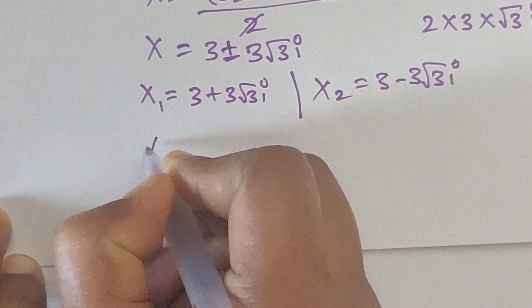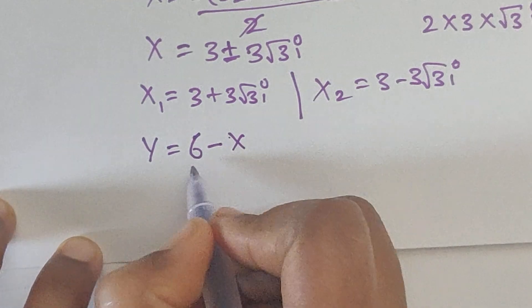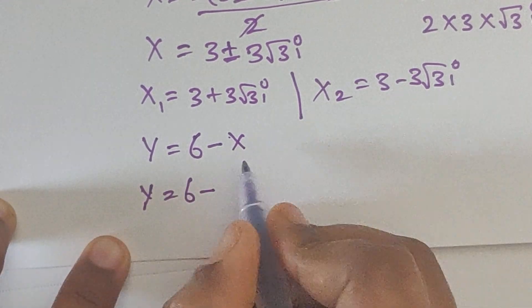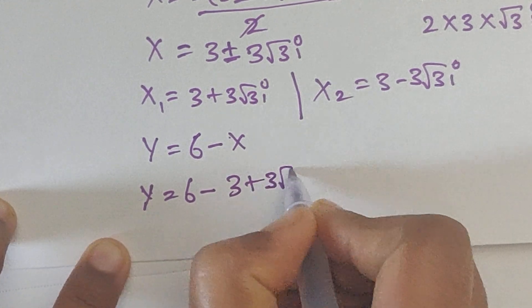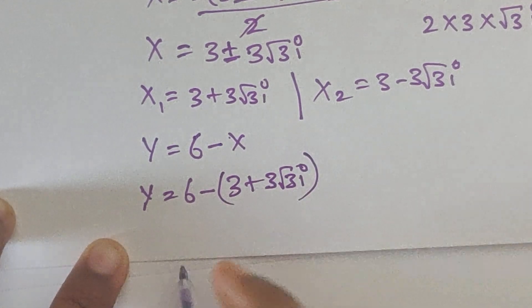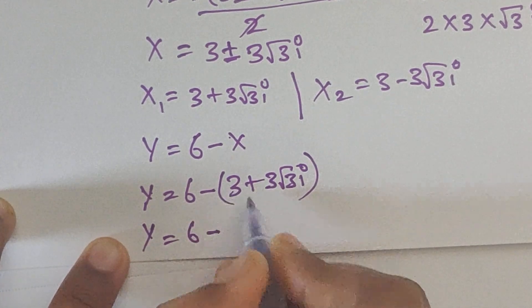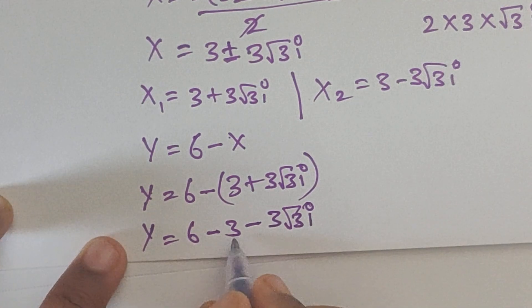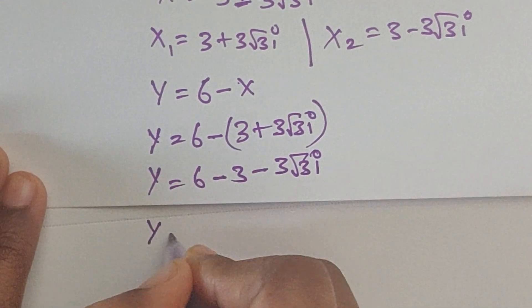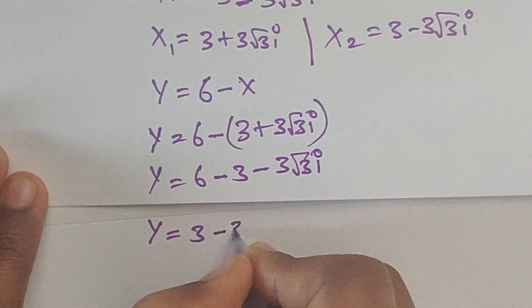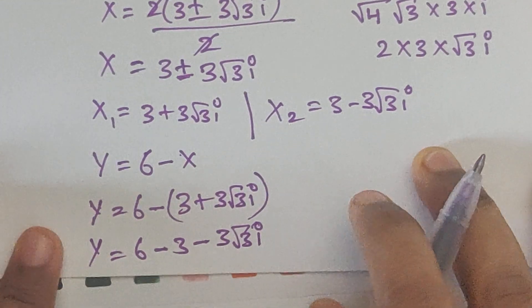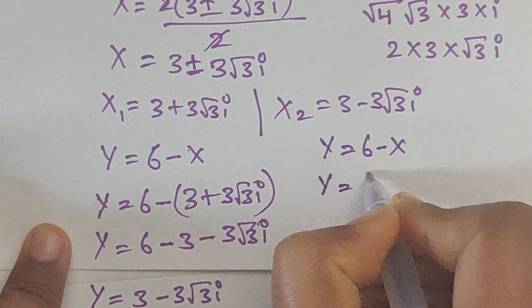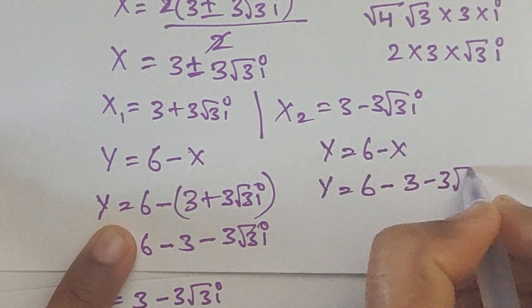Now we need to find the values of y. Since y equals 6 minus x, substitute x1: y1 equals 6 minus (3 plus 3 square root of 3i) equals 3 minus 3 square root of 3i. And y2 equals 6 minus (3 minus 3 square root of 3i) equals 3 plus 3 square root of 3i.